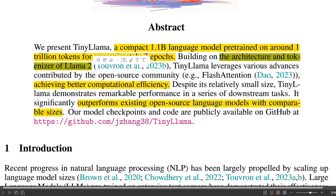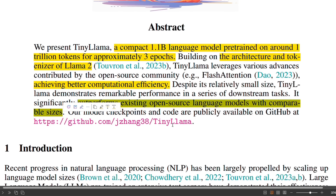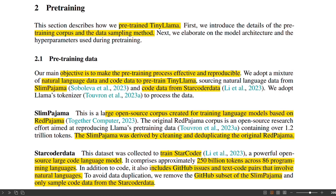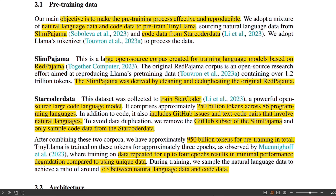Unlike the open weights models that we have been seeing, this is a truly open source model. In terms of its performance, it's able to outperform existing open source language models with comparable size. However, I don't think that is the most important thing. The most important thing is that now we have viable models that you can run on edge devices. We are going to look at the model performance on some example questions later in the video. The important part is that now you can train an end-to-end model because of its size.